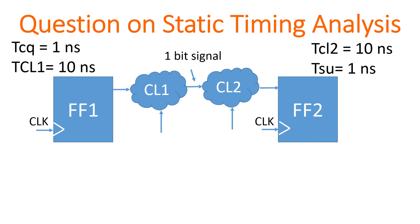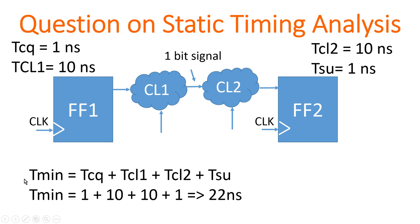Let me explain the answer. I have rearranged things a little bit. To calculate T_minimum — the minimum time period at which this circuit can operate — the formula is: T_min = TCQ + combination logic delay between flip-flops + setup time of flip-flop 2. TCQ is 1 nanosecond, TCL1 plus TCL2 is 10 + 10 = 20 nanoseconds, and TSU of flip-flop 2 is 1 nanosecond. So the minimum time period is 22 nanoseconds.